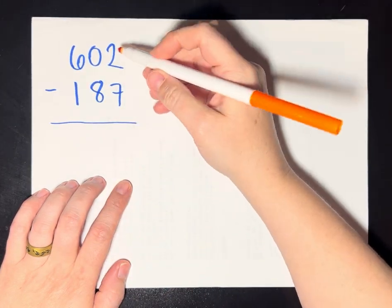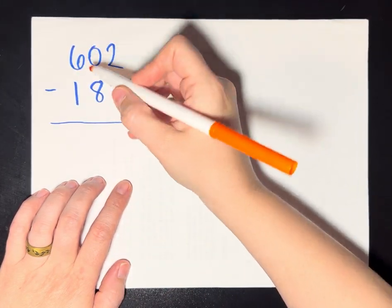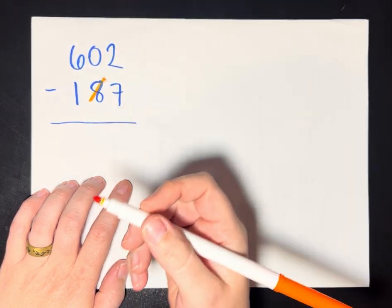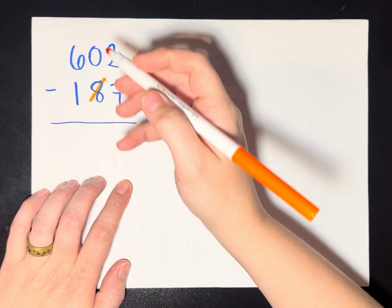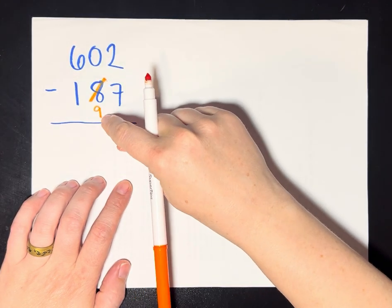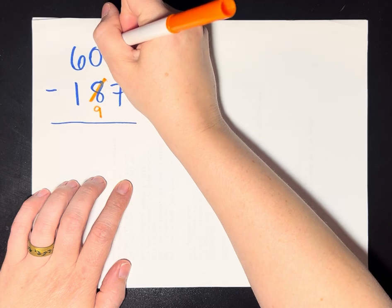And the way this algorithm works is instead of borrowing up here from the 10s, I'm going to borrow on the bottom. And instead of knocking this number down by 1, I'm actually going to increase it by 1. So this 8 increases to 9, and then this 2, I'm going